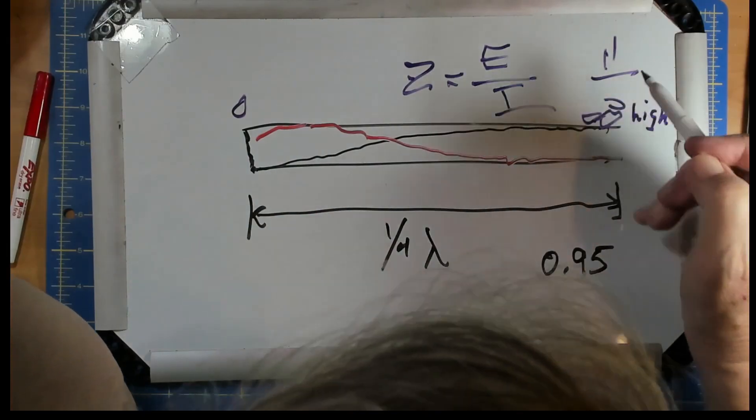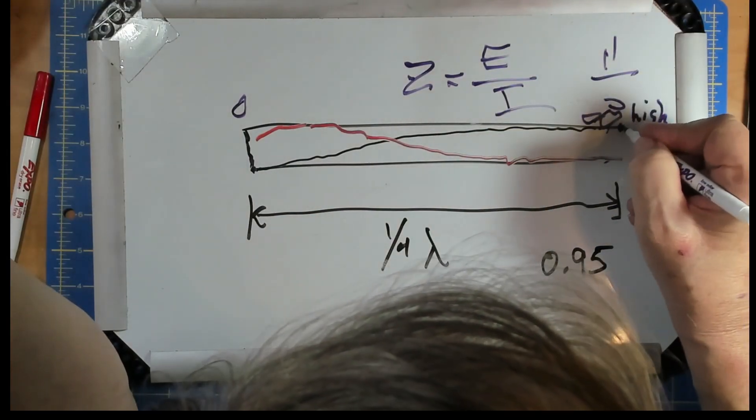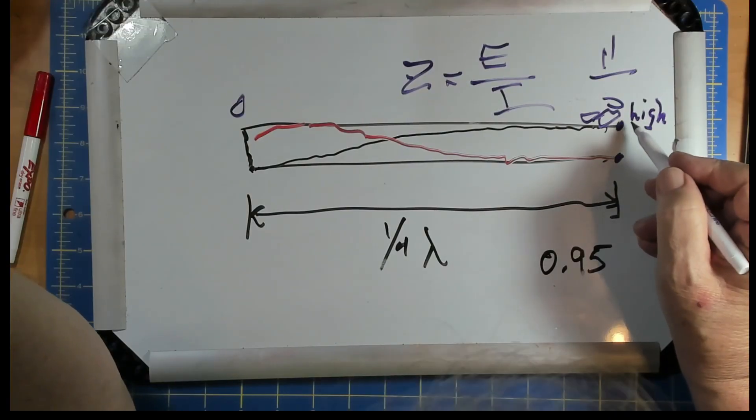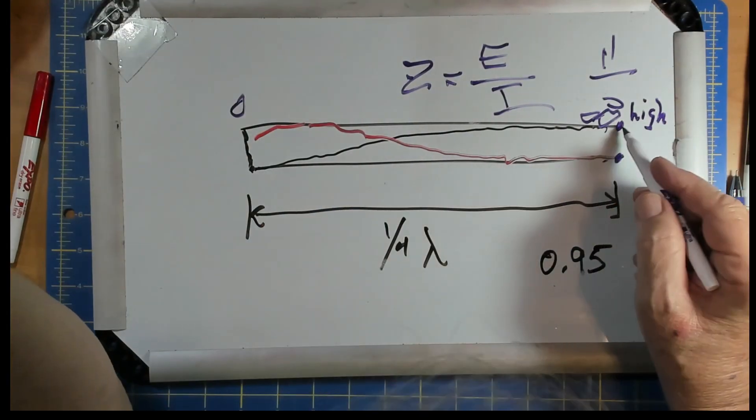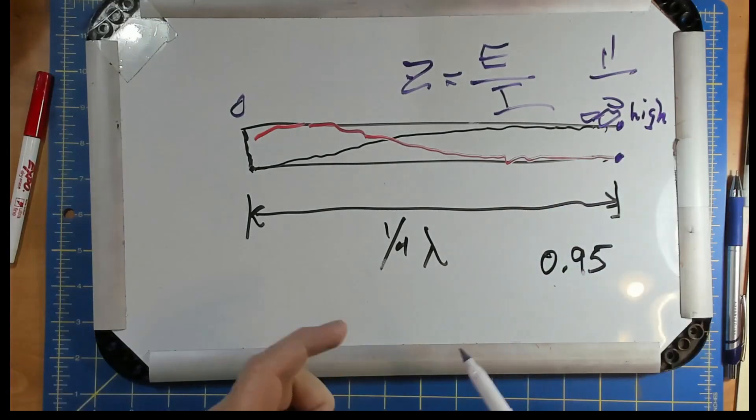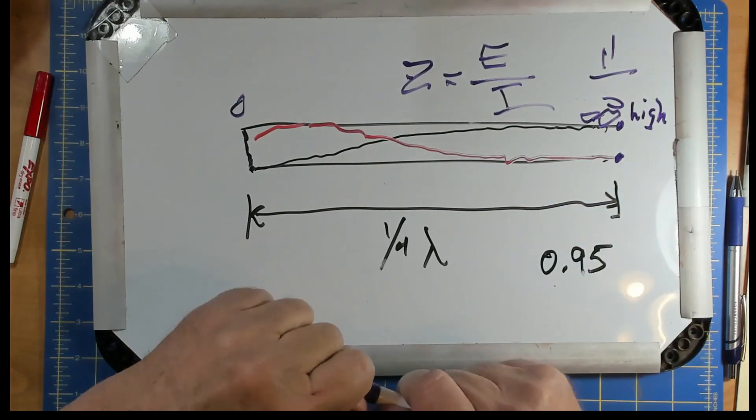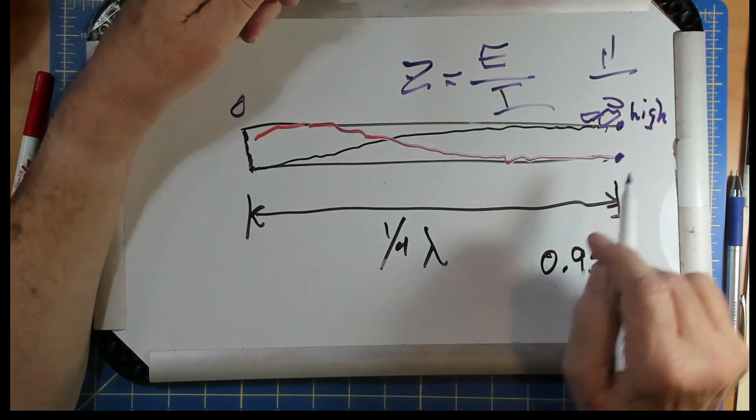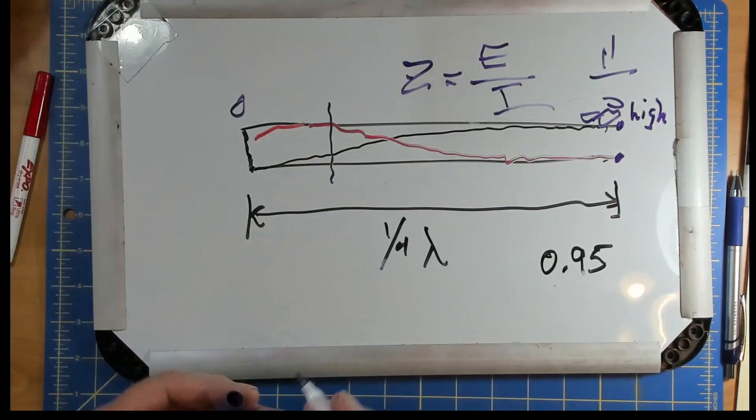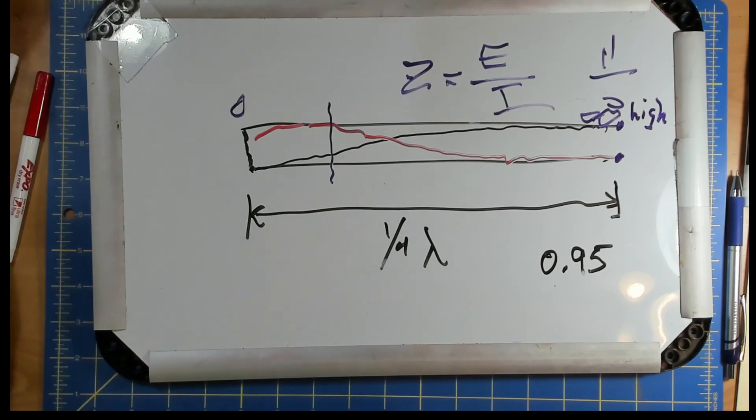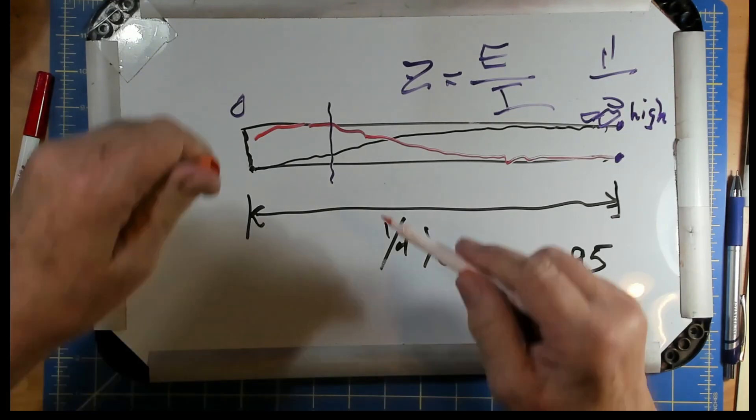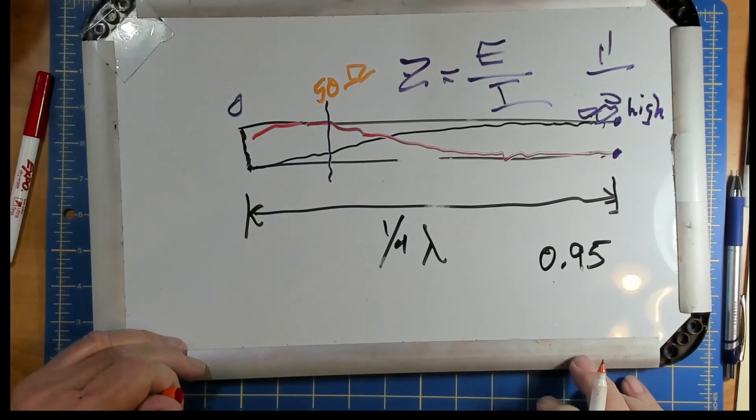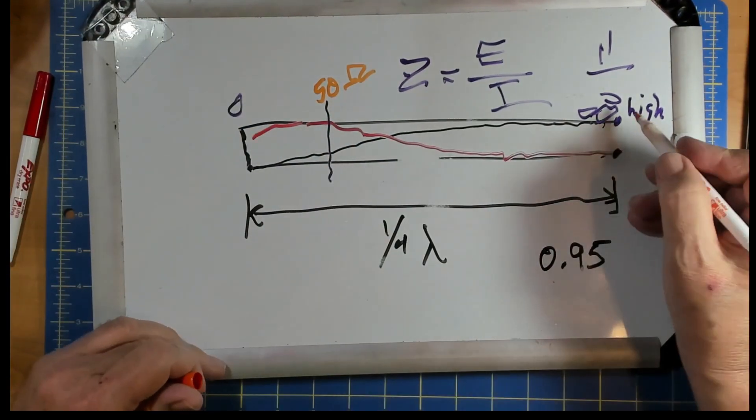So if we have this quarter wave stub and we attach this to something right here, the impedance between here and here is going to be very high, and the voltage will be at a maximum right there. Now what can we do with this? If this is high and this is zero, there will be some point along here, let's say here, where the impedance is, are you ready for this, 50 ohms. 50 ohms right there.